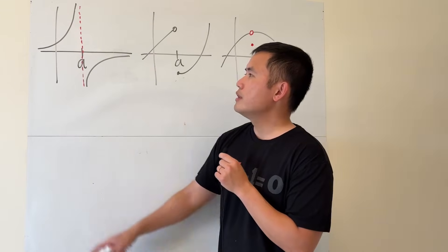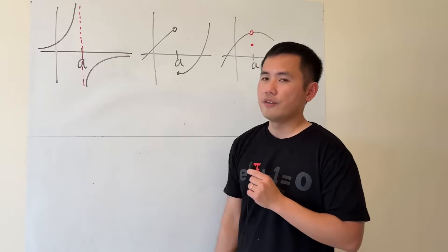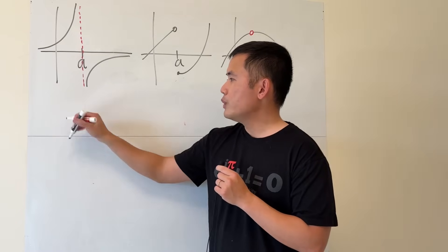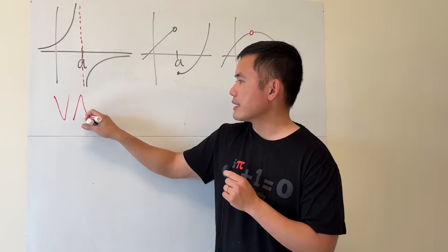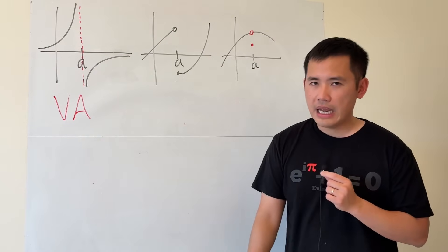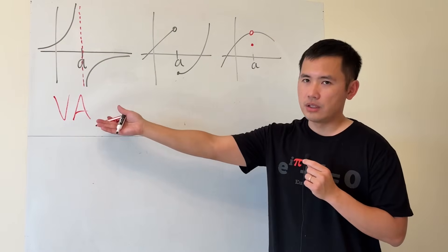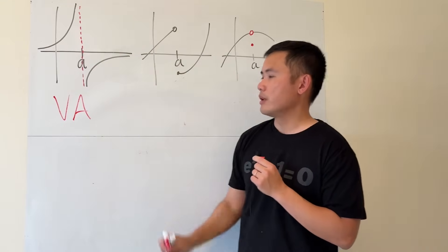For the first one, notice how the graph goes straight up to infinity and this part goes straight down to infinity. So here we say the function has a vertical asymptote at x equals a, so the function is discontinuous. And of course, we can see that from the picture as well.